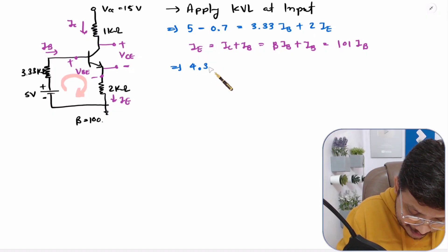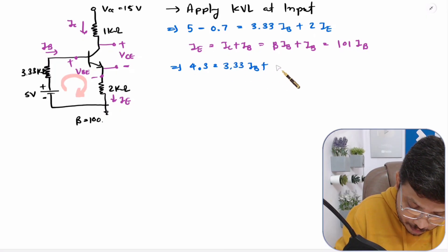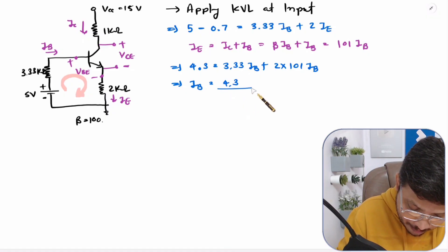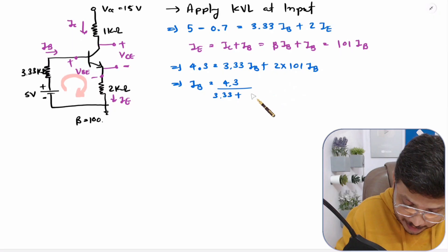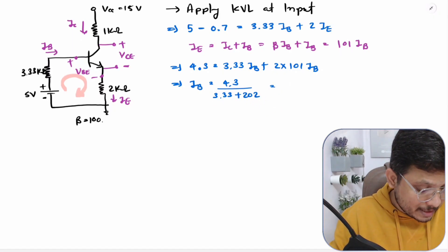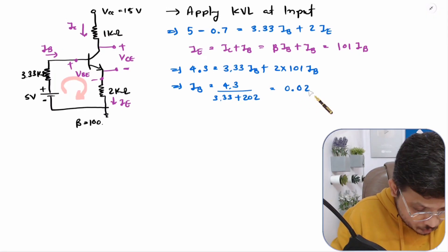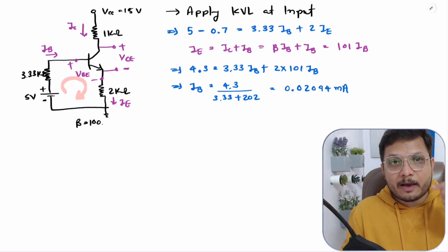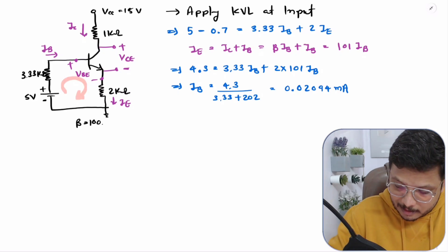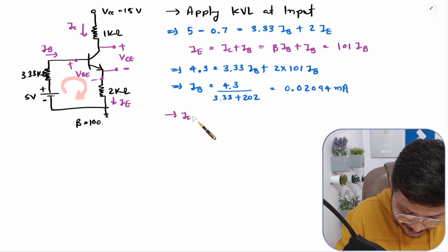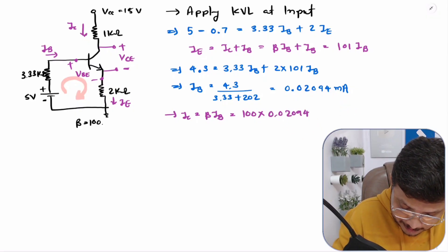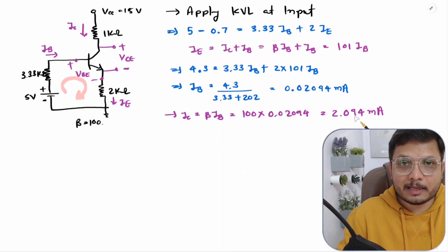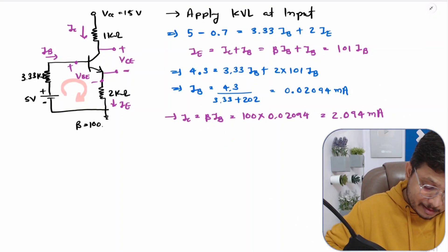So 4.3 = 3.33×IB + 202×IB. Therefore IB = 4.3 / (3.33 + 202) = 4.3 / 205.33 = 0.02094 milliampere. Now from the base current we can find the collector current: IC = beta × IB = 100 × 0.02094 = 2.094 milliampere. That is the operating point IC for Example 2.